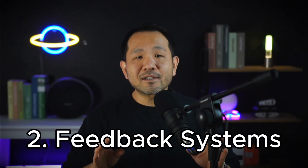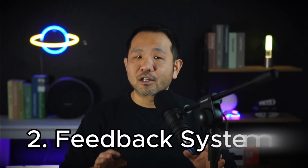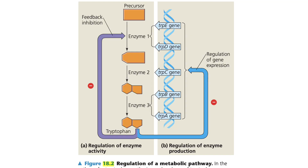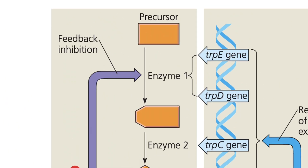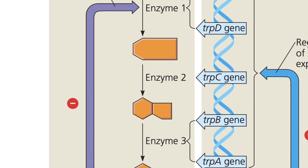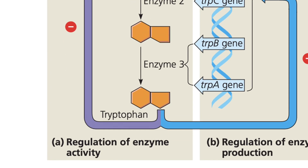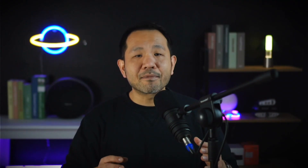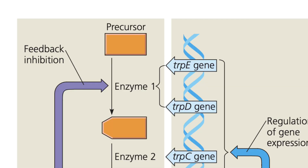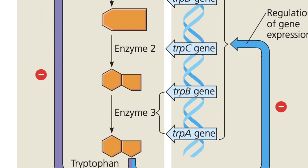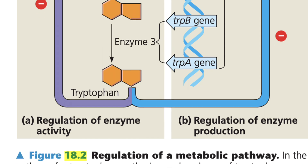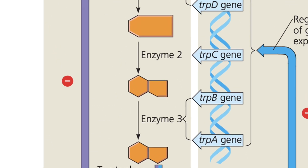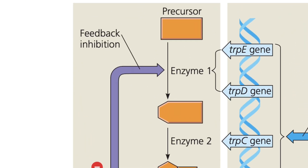Before we tackle the challenges of understanding regulatory systems, let's have a quick overview of what feedback systems are. Figure 18.2 illustrates two major types of feedback regulation. On the left, as a review from Unit 3 on enzymes, we have allosteric regulation. As precursors become their products — in this case tryptophan — the buildup of too much tryptophan imposes a self-regulating force against that metabolic pathway.